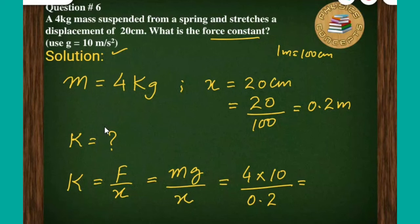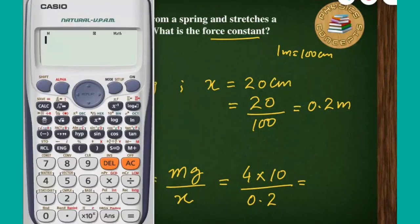Now I would simplify by calculator. 4 times 10 is 40, then we will divide it by 0.2, so 200.